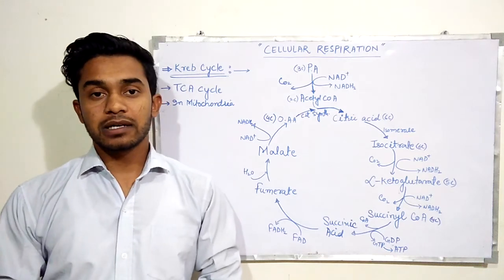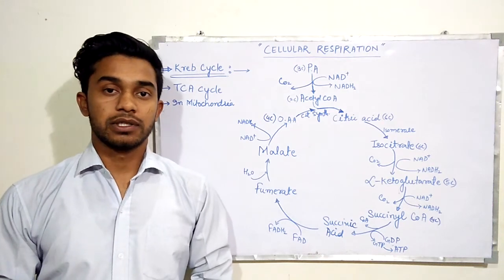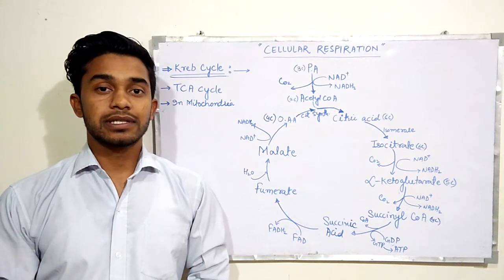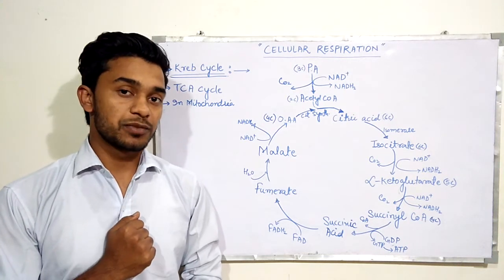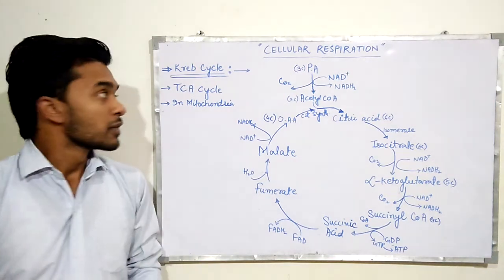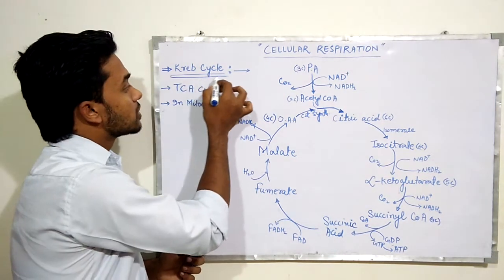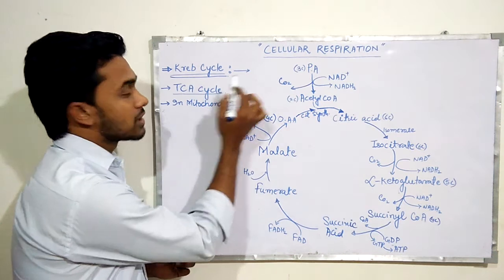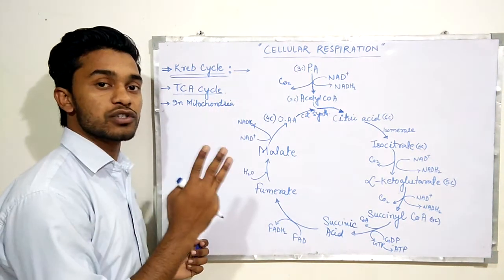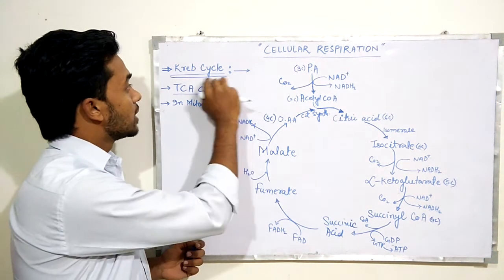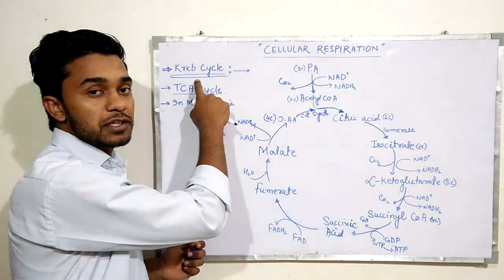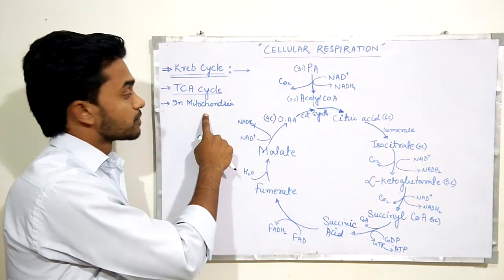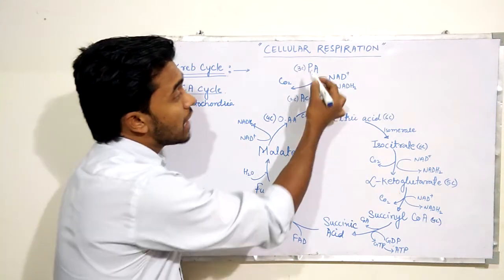Welcome again to Farman Khan's biology, a step towards smart learning. Today we are going to discuss the next step of cellular respiration: the Krebs cycle. The Krebs cycle is also known as the TCA cycle, as it contains three carboxylic acid groups. It is named the Krebs cycle after the scientist who discovered it, and it takes place in the mitochondria.